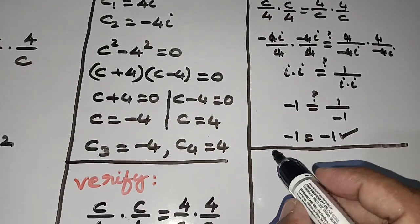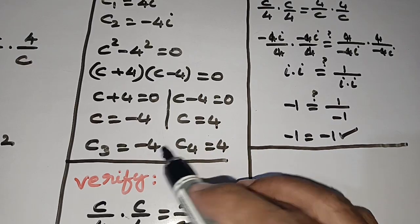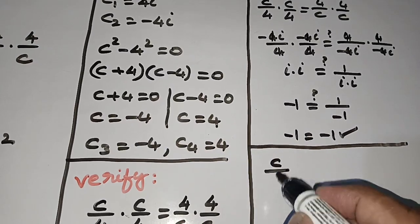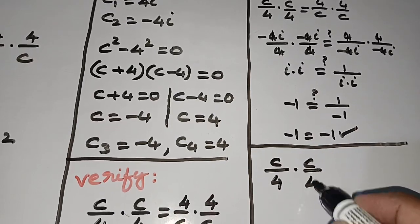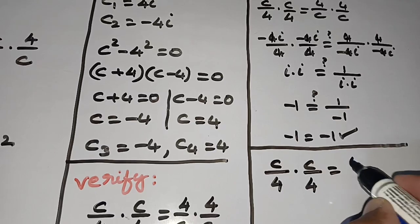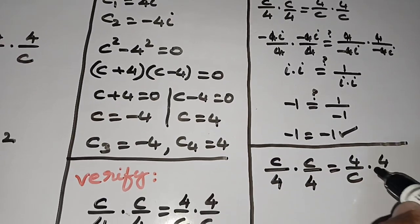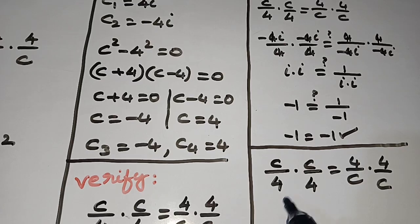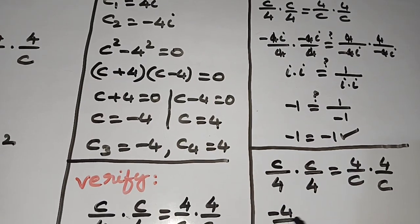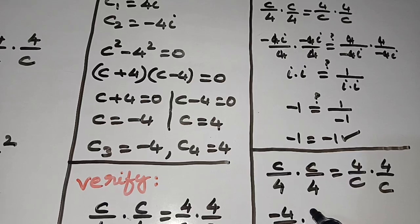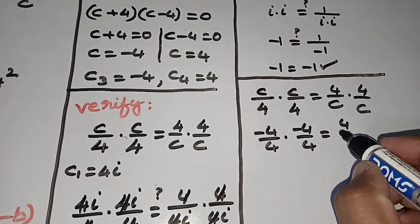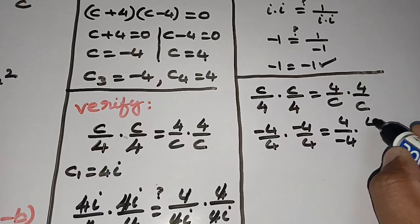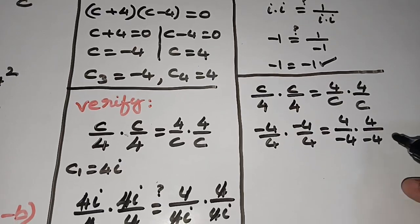Now taking c₃ = -4, we substitute into c/4 times c/4 equals 4/c times 4/c. So: (-4)/4 times (-4)/4 equals 4/(-4) times 4/(-4).